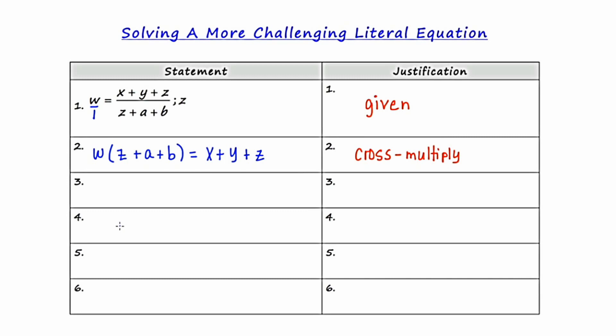Okay, to transition from step two to step three, I'm going to distribute the W through the expression in parentheses. And as I write each term, I'm going to write them in alphabetical order. So I'm going to start with WZ plus AW plus BW. And then the right hand side is going to remain the same. Again, the justification for this step will be distribution.